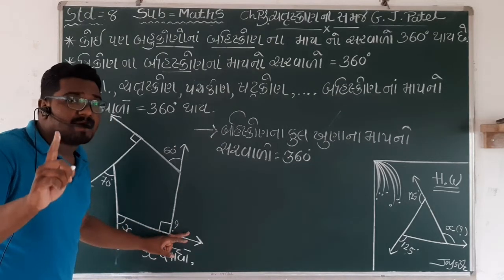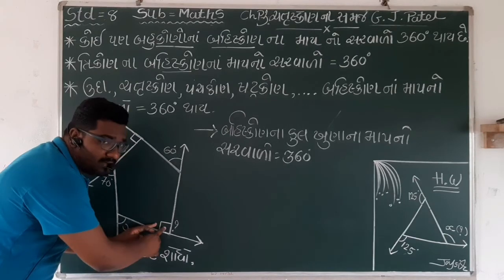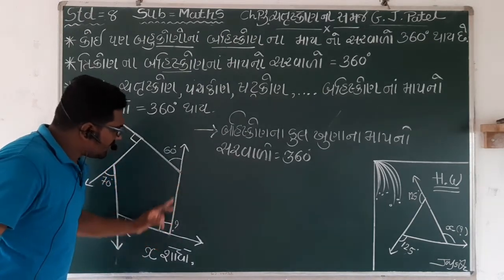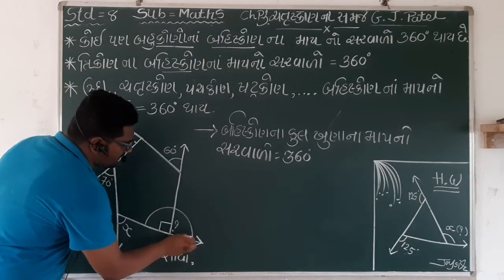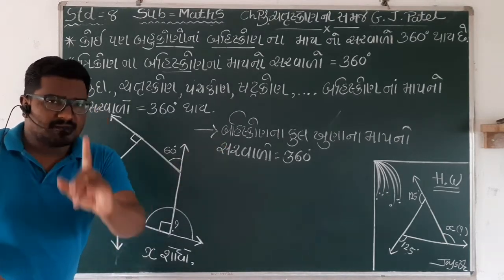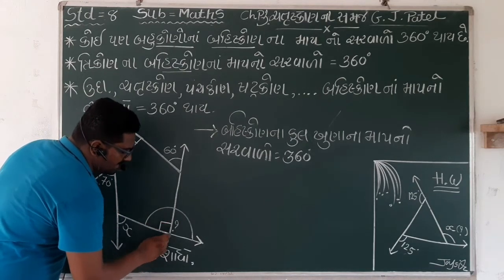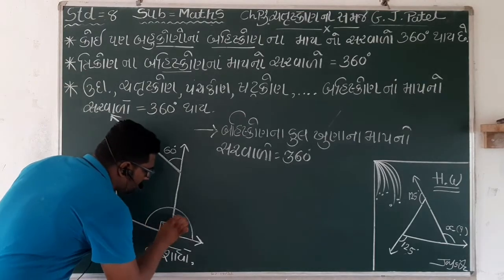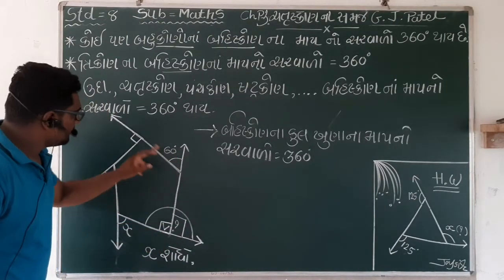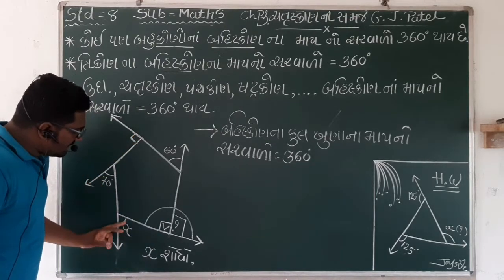આ આકૃતિ ફરી એ એક-વાર જોઈ લો - X સોધ્વાનો છે, આ ખૂણા નો માપ આપ્યો નથી. પણ hint આપી છે - અંદર નો ખૂણો 90 છે, તો બહાર નો ખૂણો? રેખા ઉ-પ-ર ના જોડ ના ખૂ-ણ - 180 માંથી 90 બાદ - બહારનો ખૂ-ણો 90. વિ-દ્યા-ર-થી, ઓ-લ-રે-ડી 70 આ-પ-યો - 90 ના, 70 ના, X આ-પ-ણે સો-ધ-વા-નો.